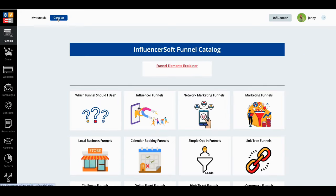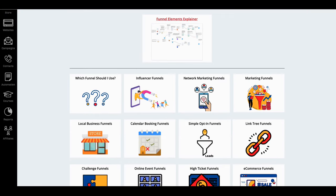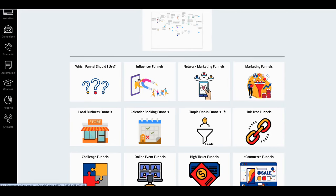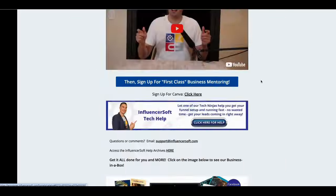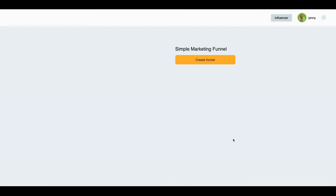We're going to click on catalog. Look at all the different funnels we can make — a real estate funnel, a high ticket funnel, a book funnel. We're going to go to business marketing. The challenge is I told you we'd make a funnel in less than three minutes, and that's what we're going to do. We can make a very complex funnel, like a mini course live funnel, but that won't take less than three minutes. Let's just make a simple marketing funnel — we'll click on simple marketing funnel.